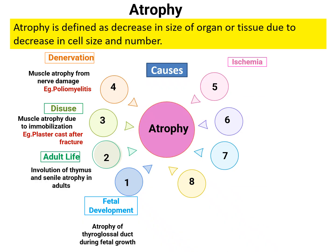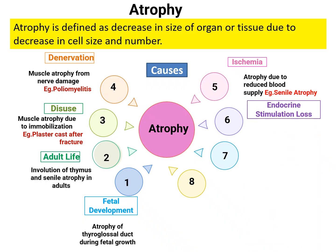Ischemic atrophy results from lack of blood supply to the muscle. Senile atrophy is the best example of ischemic atrophy. Regarding endocrine stimulation loss — endocrine-dependent organs are entirely dependent on endocrine stimulation. When there is no endocrine stimulation, the organ undergoes atrophy. One example is the uterus in postmenopausal women — no estrogen leads to atrophy of the endometrium and uterus.